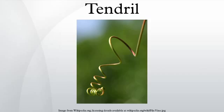In the garden pea, it is only the terminal leaflets that are modified to become tendrils. In other plants such as the yellow vetch, the whole leaf is modified to become tendrils while the stipules become enlarged and carry out photosynthesis.